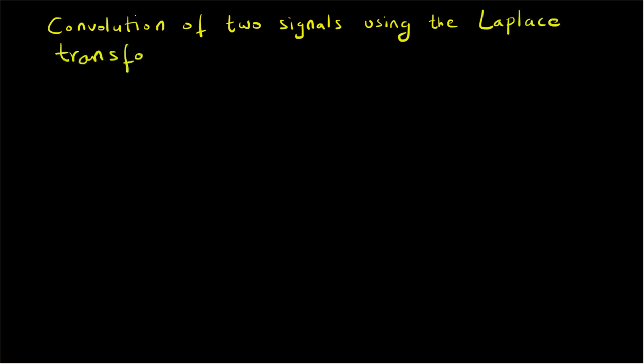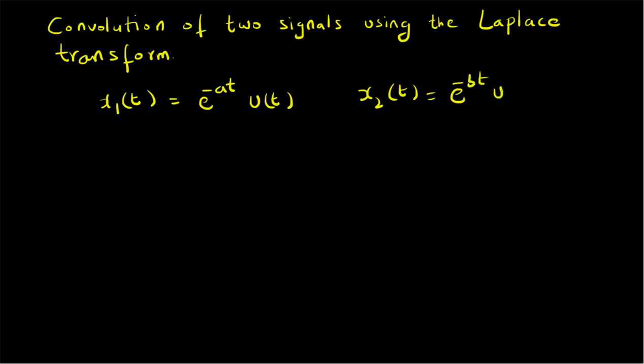Hello, welcome. In this short video let us look at an example illustrating the convolution of signals using the Laplace transform. In this example we are going to consider the following signals: x1(t) = e^(-at) · u(t) and x2(t) = e^(-bt) · u(t). Given these two continuous signals, we want to find their convolution output or the convolution integral.